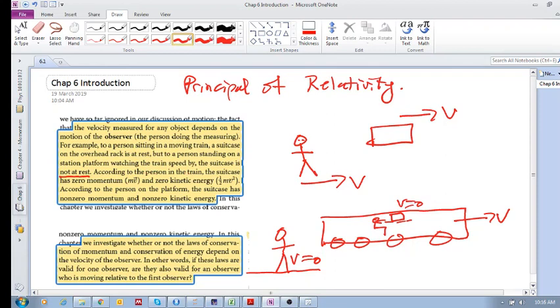According to the person in the train, the suitcase has zero momentum - why? Because the velocity is zero - and zero kinetic energy - why? Because this velocity relative to this person is zero. Also, according to the person on the platform, the suitcase has non-zero momentum and non-zero kinetic energy. Why? Because the kinetic energy of the suitcase relative to this person is not zero.